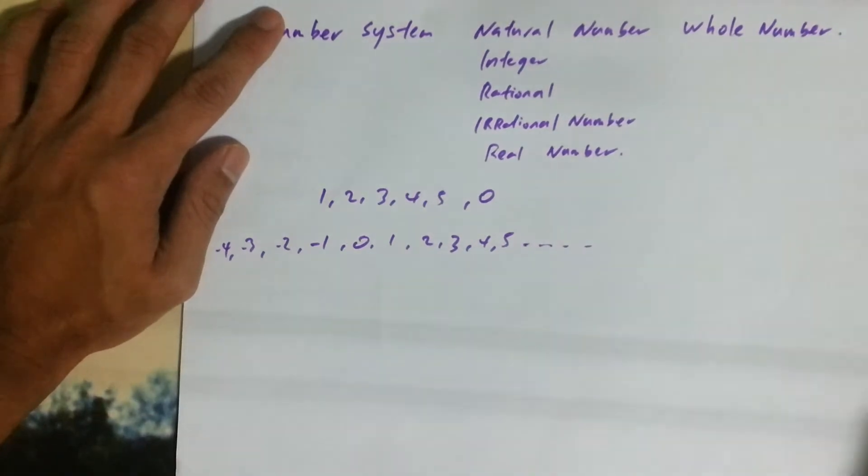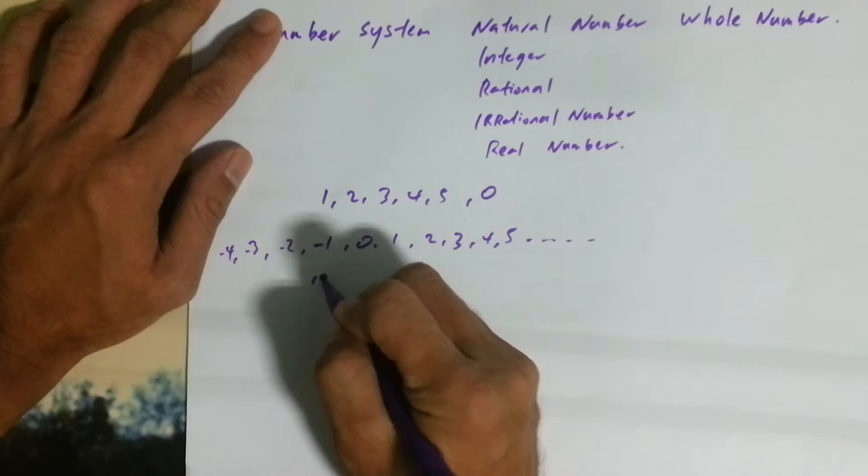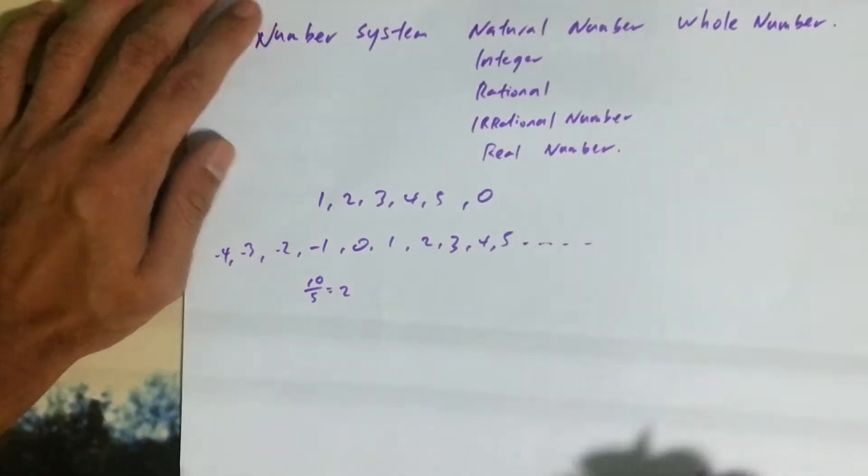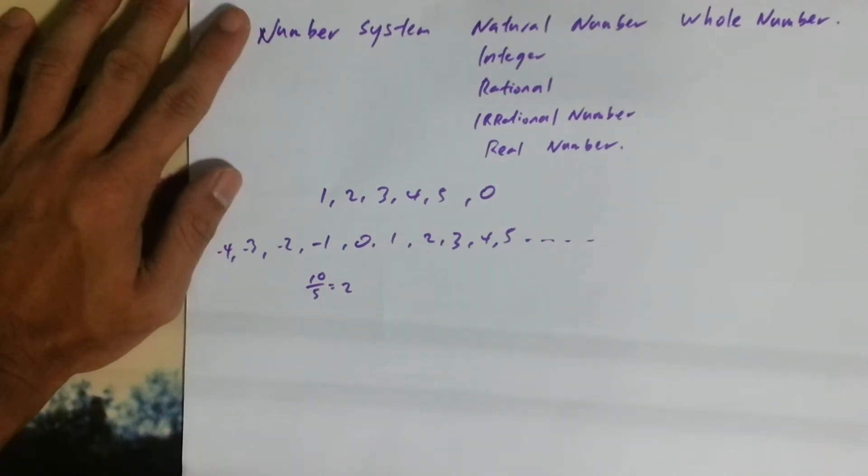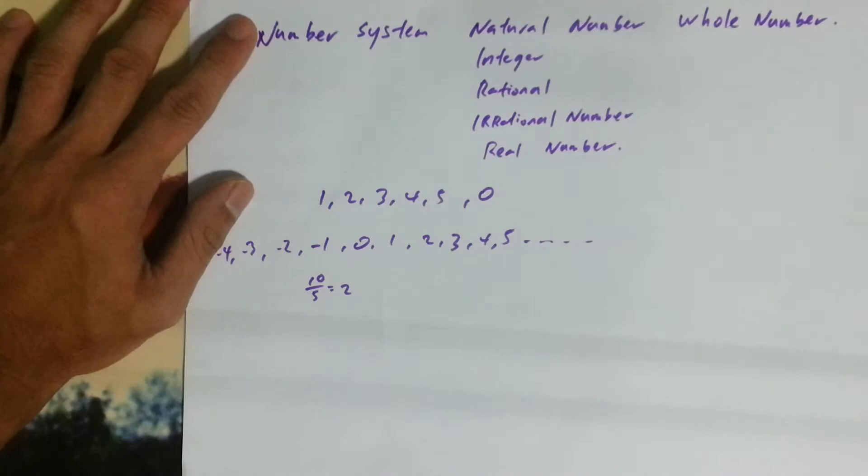Next we go to rational numbers. Rational number is anything that is a fraction. Two to five is a fraction, is equal to two. Anything that is not a fraction is called irrational number. For example...